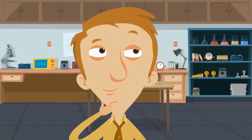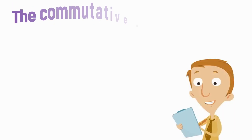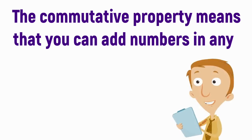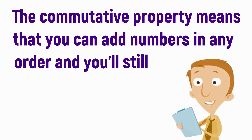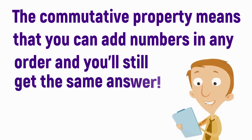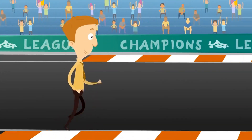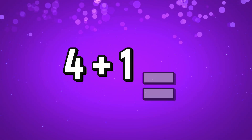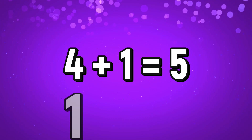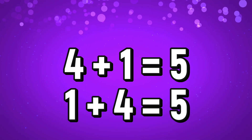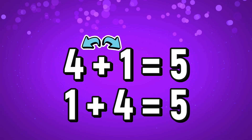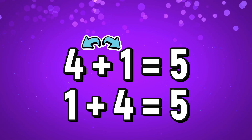What is the commutative property of addition? Well, the commutative property means that you can add numbers in any order and you'll still get the same answer. That's pretty cool. Here, I'll show you. 4 plus 1 equals 5. 1 plus 4 equals 5. These numbers can switch places and you still get the same answer.